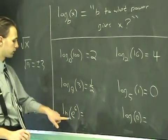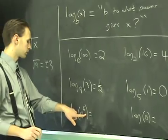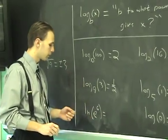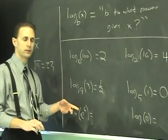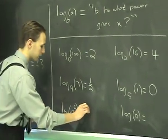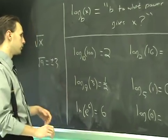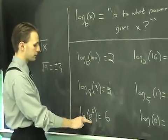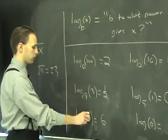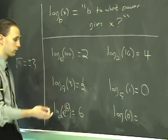The natural log of e to the 6th. This one's kind of important. This says, e to what power gives e to the 6th? That's obviously 6. They sort of undo each other. If the base matches the base of the argument, then the result is just going to be whatever the exponent is.